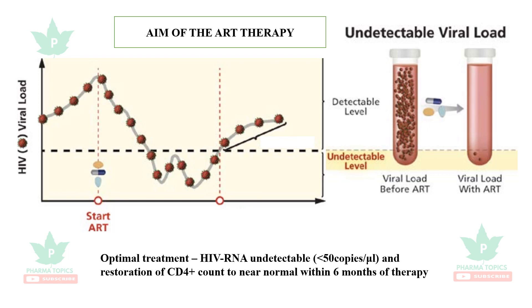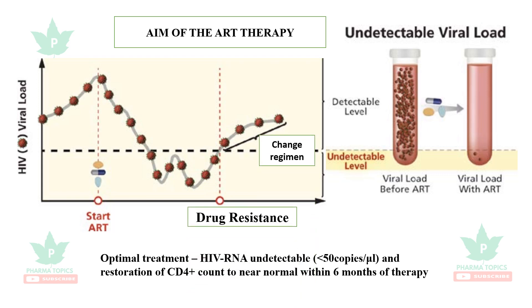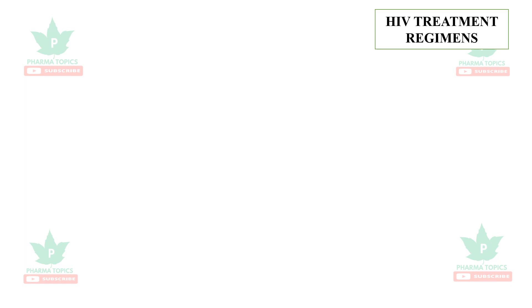Viral load should gradually decrease to undetectable levels with therapy. If the viral load rises again after a few months or years on a particular regimen, it indicates drug resistance. In that case, the regimen must be changed — the resistant drug identified and replaced.